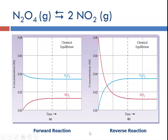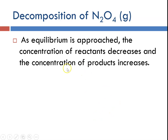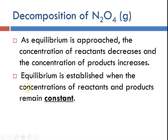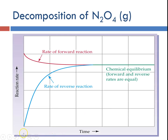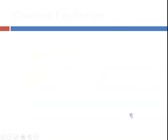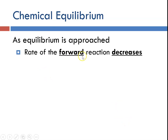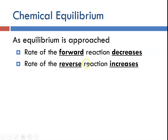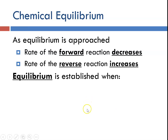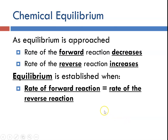As equilibrium is approached, the concentration of the reactants will decrease and the concentration of the products will increase until equilibrium is established, at which point the concentrations of reactants and products remain constant. If we look at the reaction rate, the rate of the reverse reaction goes from zero until equilibrium, and the forward reaction rate decreases until it reaches equilibrium. When the rate of the forward equals the rate of the reverse, you have reached equilibrium.